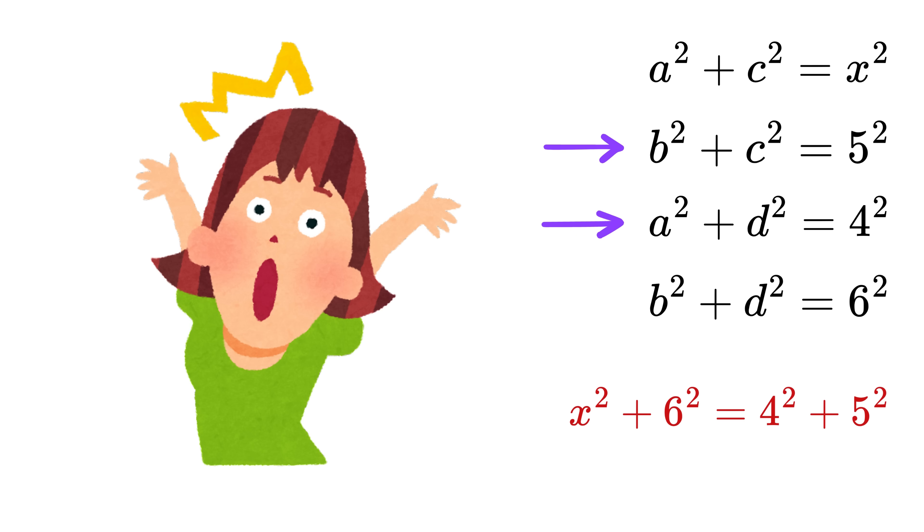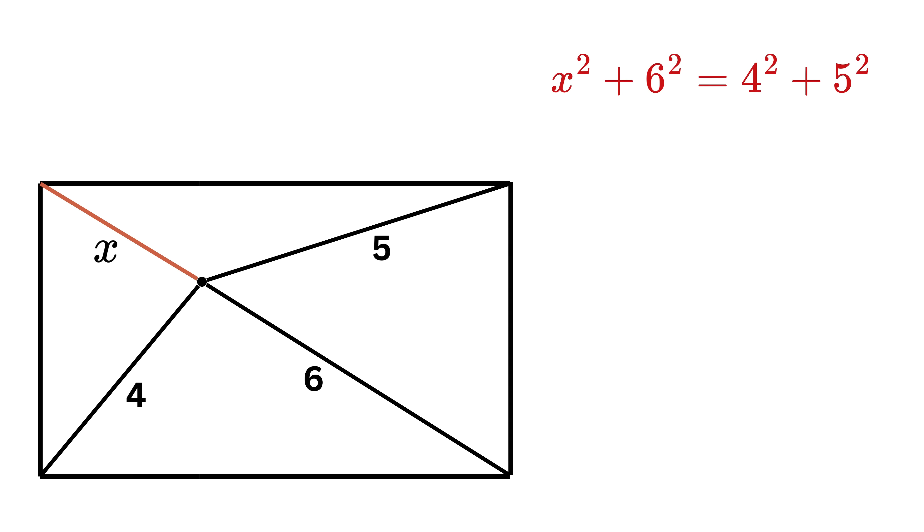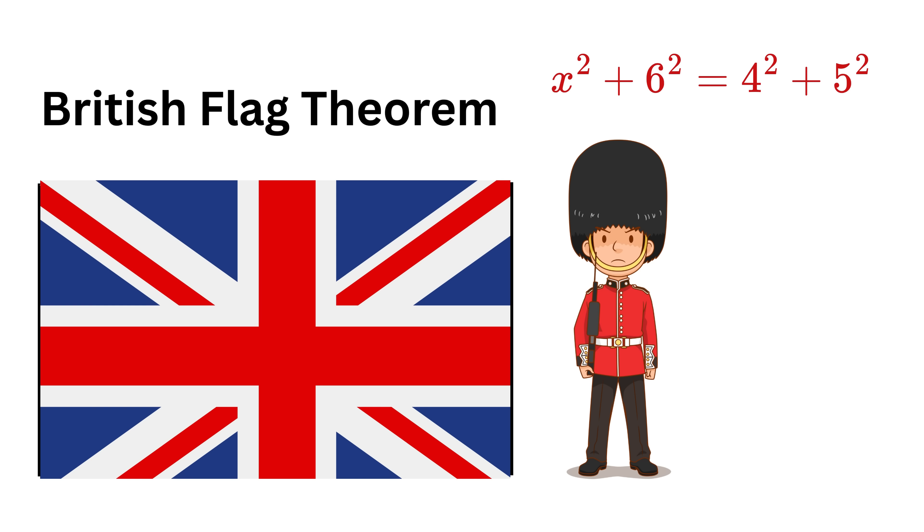What just happened here? We didn't know any dimensions of the rectangle. We didn't even know where the point was. Yet somehow, using just the Pythagorean theorem four times, we were able to cancel out all the unknowns and end up with an equation containing only the known lengths and X. This is not a coincidence. This theorem is called the British Flag theorem. And it is a lesser known geometric theorem.